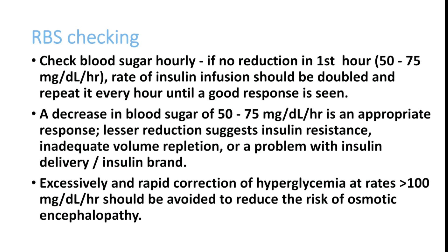When giving larger volumes of insulin, always consider insulin resistance. If giving more than 100 units per day as an infusion, think about insulin resistance and consider switching to analog insulin. Excessively rapid correction of hyperglycemia — more than 100 mg/dL per hour — should be avoided to prevent osmotic encephalopathy, as a sudden drop in blood sugar can cause osmotic swelling of brain cells. The preferable rate of drop is 50 to 75 mg/dL per hour.